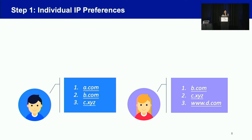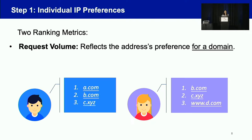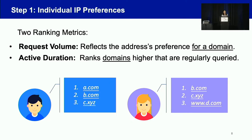For the first step, we calculate individual preference for each IP address. We consider two ranking metrics for calculating domain-IP preference. First, we consider request volume, which reflects the IP address's preference for a domain. Second is active duration — the intuition is that popular domains are constantly queried over time, so by using active duration, we rank higher domains that are regularly queried. Then we combine these two metrics to calculate each individual IP's preference ranking.